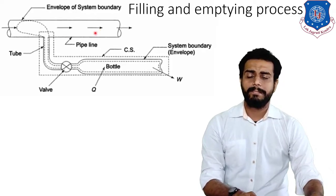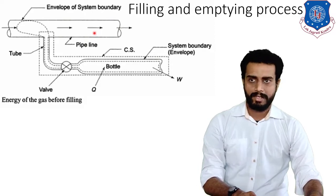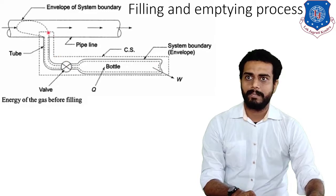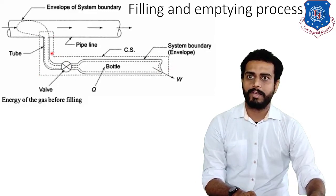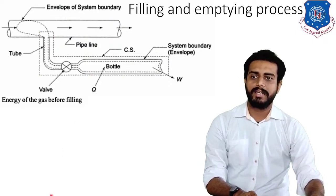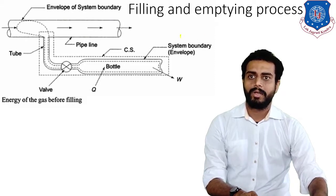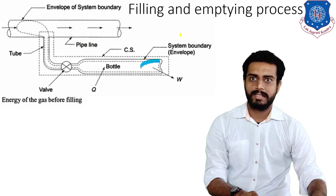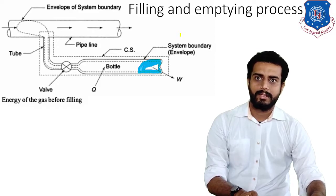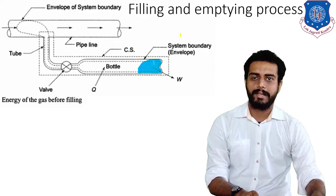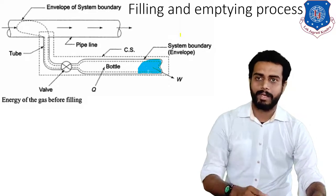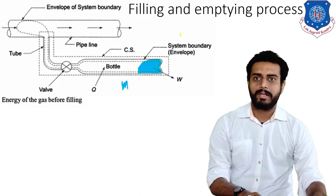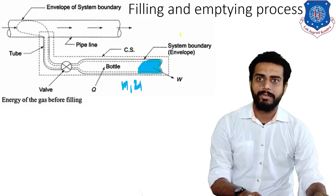Now, what we will do is find the energy of the gas before the filling. We will consider this control system. Initially, let us say some amount of gas — highlighted in blue — is already present in the bottle. The mass of this gas is M1, and the corresponding property values are subscript 1. The mass is M1 and the energy of that gas will be U1.